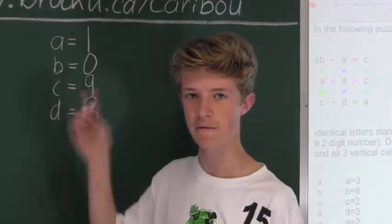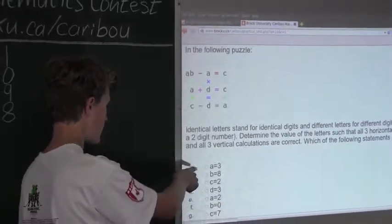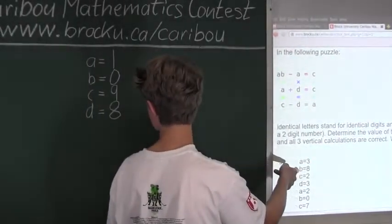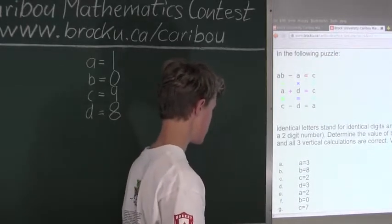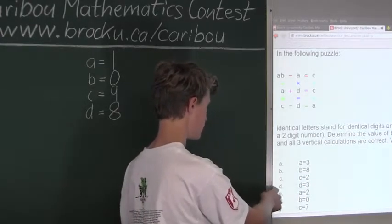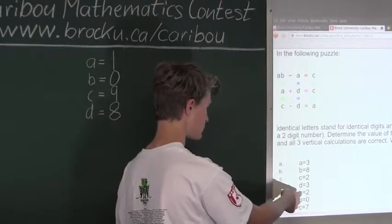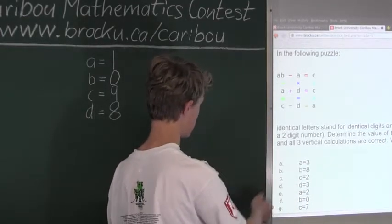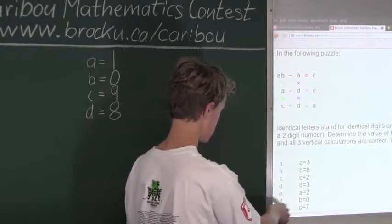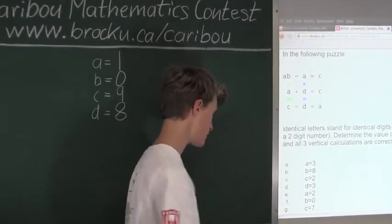Now we know the values of all four unknown variables and can look at the options given. Option A: A equals 3 — false, A is 1. Option B: B equals 8 — false, B is 0. Option C: C equals 2 — false, C is 9. Option D: D equals 3 — false, D equals 8. Option E: A equals 2 — false, A equals 1. Option F: B equals 0 — this is correct, B is 0. Option G: C equals 7 — false, C equals 9. So the correct answer is B equals 0.